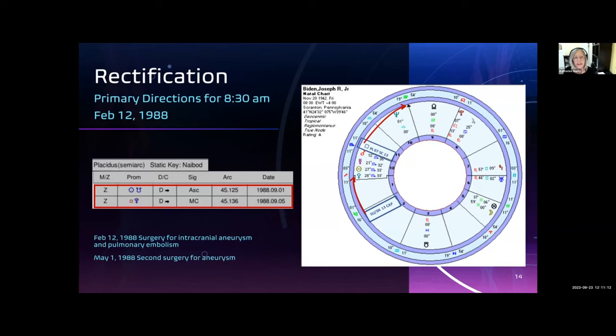For the rectification, I started with the 1988 aneurysm surgery. Since this threatened his life, I thought there should be a dramatic direction for the event. I ran the primary directions using the Morinus free software. In any software, the results are given in tabular form and not graphically on a chart.